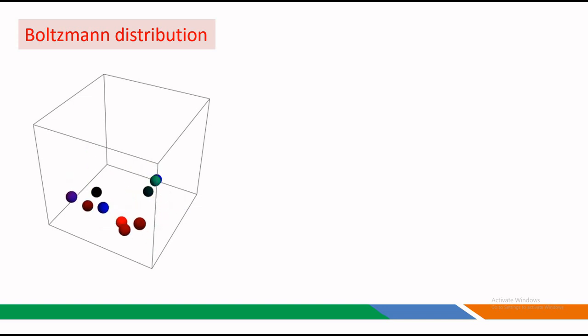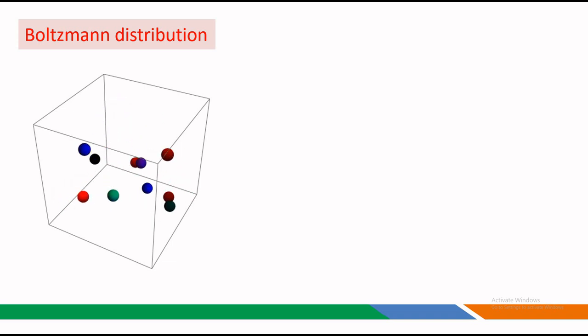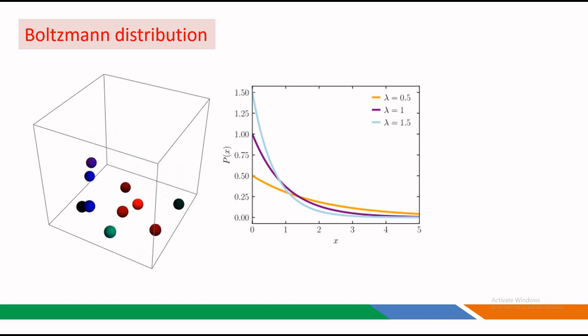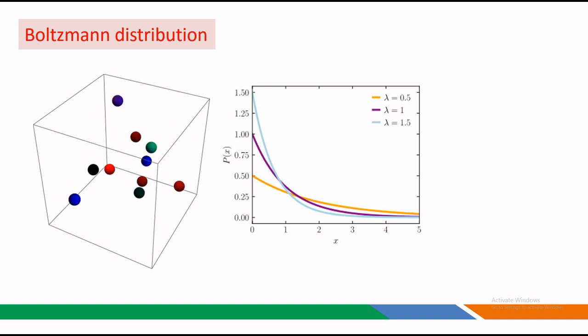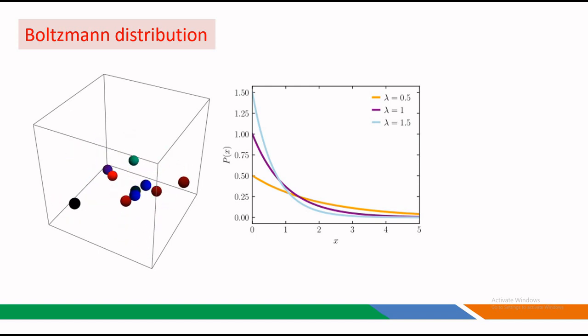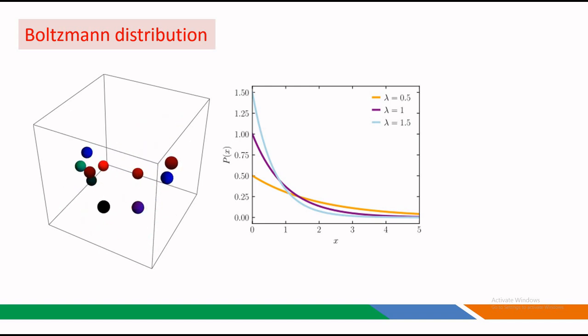The Boltzmann distribution is a probability distribution that describes the statistical distribution of energies among the particles in a system. Imagine we have a box filled with particles bouncing around. The Boltzmann distribution comes into play when talking about the distribution of energies among these particles. Each particle in our box has its own energy level, and these energy levels can vary — some particles have higher energies while others have lower energies.